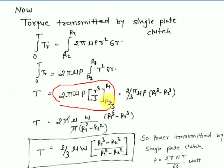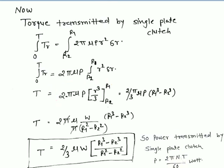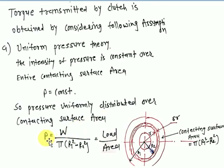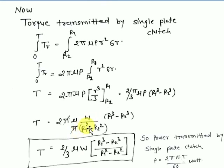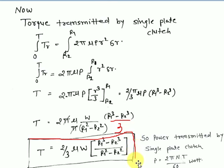Substituting the value of p = W / (π(r1² - r2²)) into the torque equation, the π terms cancel, and we get the final torque equation by uniform pressure theory: T = (2/3) × μ × W × (r1³ - r2³) / (r1² - r2²).